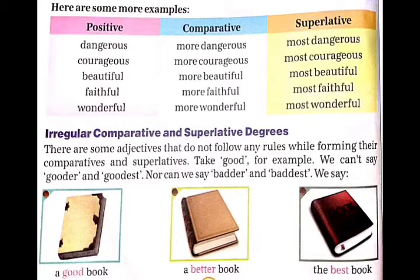Irregular comparative and superlative degrees. There are some adjectives that do not follow any rules while forming their comparatives and superlatives. कुछ adjectives कोई भी rules follow नहीं करते हैं जब उनके comparatives and superlatives degree बनाये जाते हैं. Take 'good' for example — we can't say 'gooder' and 'goodest'. We say a good book, a better book, the best book.